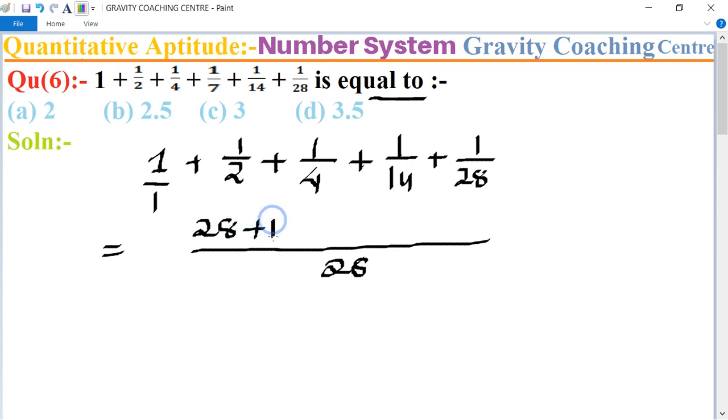28 divided by 4 equals 7, 28 divided by 14 equals 2, and 28 divided by 28 equals 1. Adding these numerators: 28 + 14 + 7 + 2 + 1.